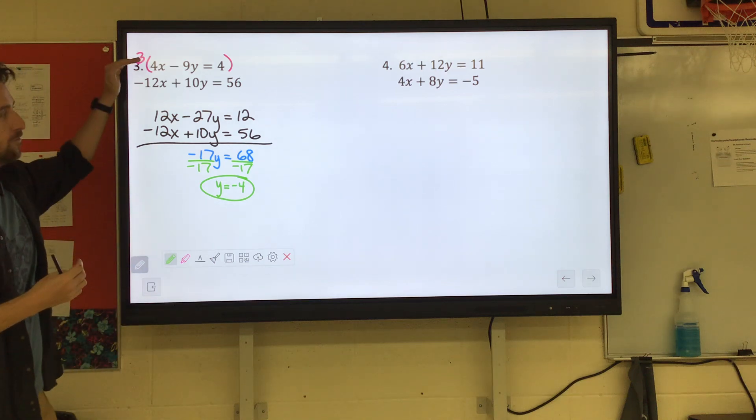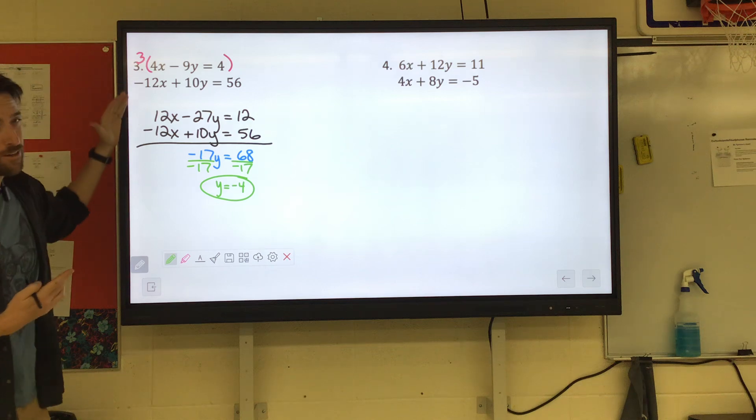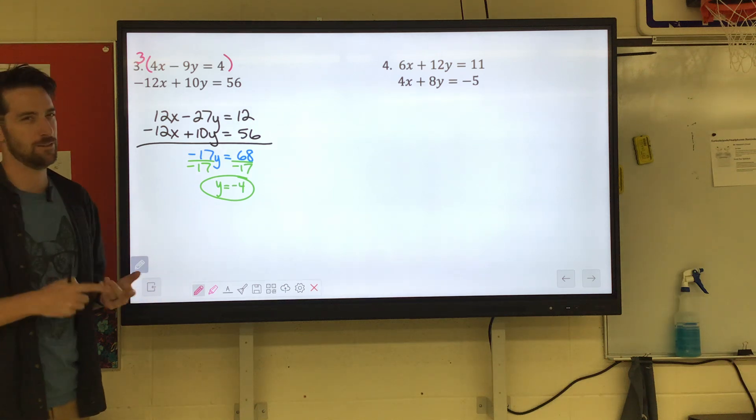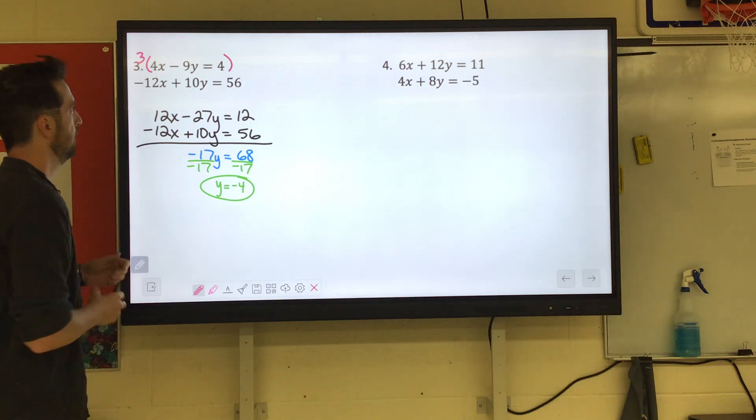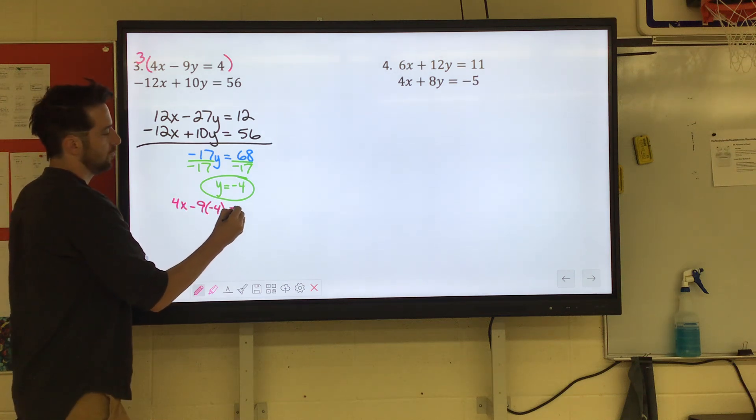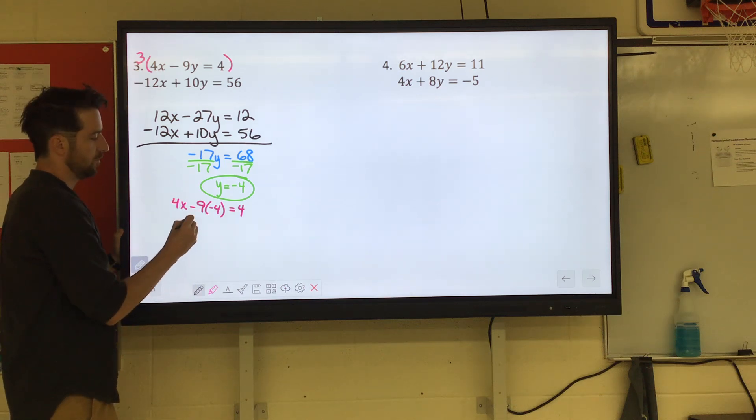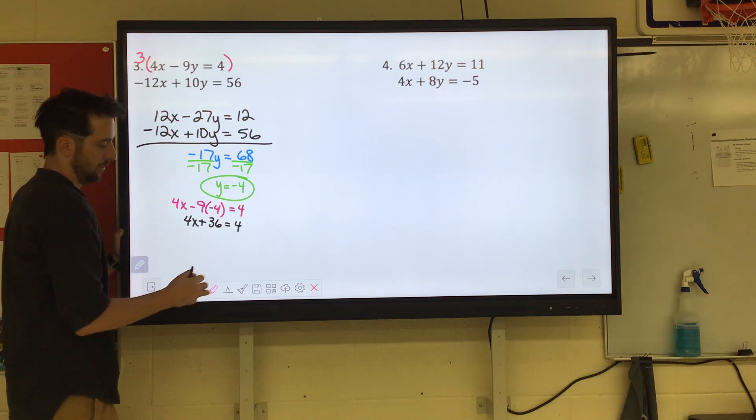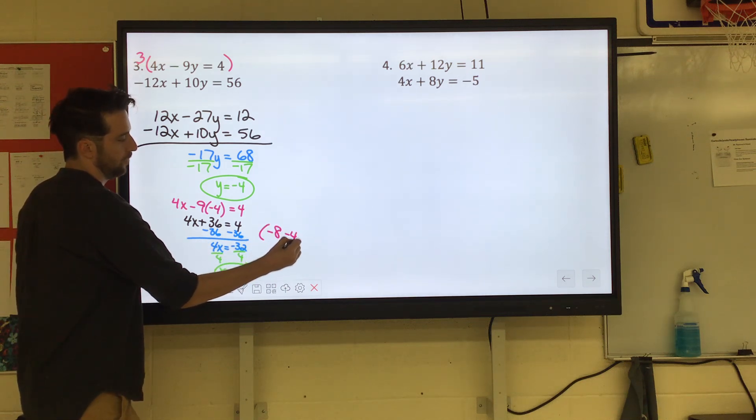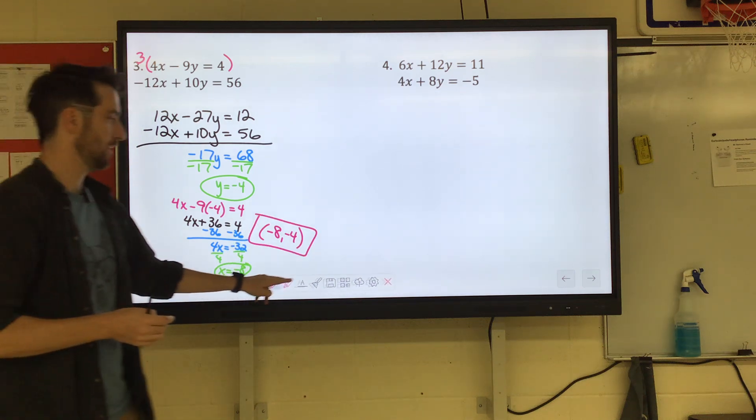You still got to find X. You can use the original two. You can even use the new equations. I usually go with the original two just because they are smaller numbers. Unless you're dealing with decimals or fractions, but we really don't have to deal with that. So I'm going to go with the first equation. 4X minus 9Y, negative 4, equals 4. Now negative 9 times negative 4 is positive 36. We're going to subtract the 36. 4X equals negative 32. And then we'll divide by 4 to get X equals negative 8. We write it as a coordinate, XY, negative 8, negative 4. If we were to graph these two equations, they would intersect at negative 8, negative 4.